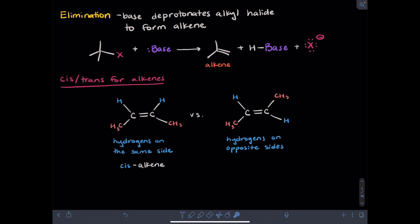In the other case, one hydrogen is on the top of the alkene and the other hydrogen is on the bottom of the alkene. We would say these are on opposite sides of the alkene, and we would call this a trans alkene. Notice that these two alkenes, although they don't contain any chiral centers, are non-superimposable and they are not mirror images of each other. Because of this, we would classify them as diastereomers.